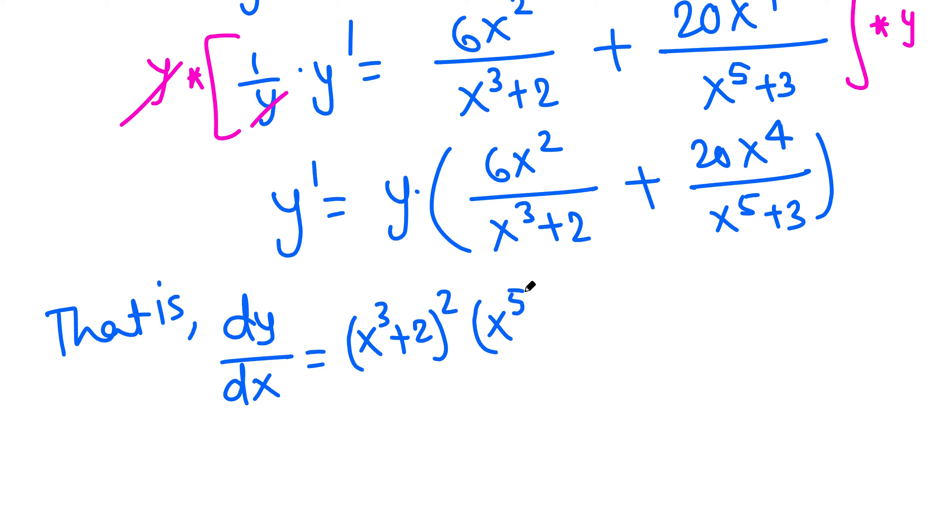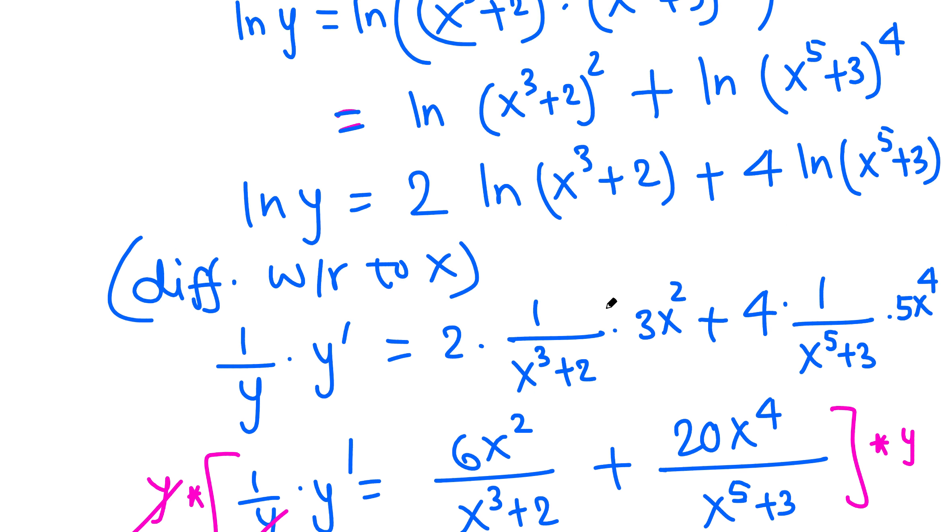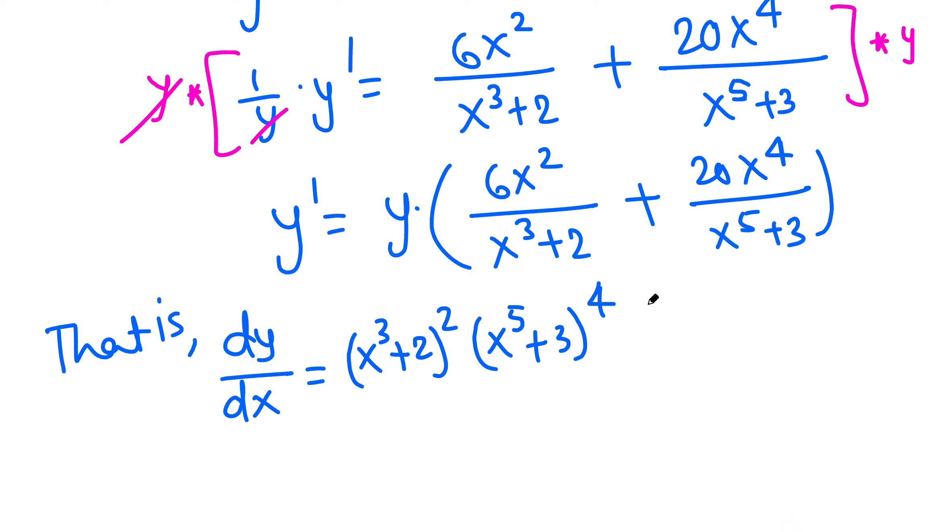...times (x⁵ + 3) raised to 4. That's y times whatever this is. Just copy this down here. I'm getting lazy—you don't have to simplify. You may leave here as the final answer.